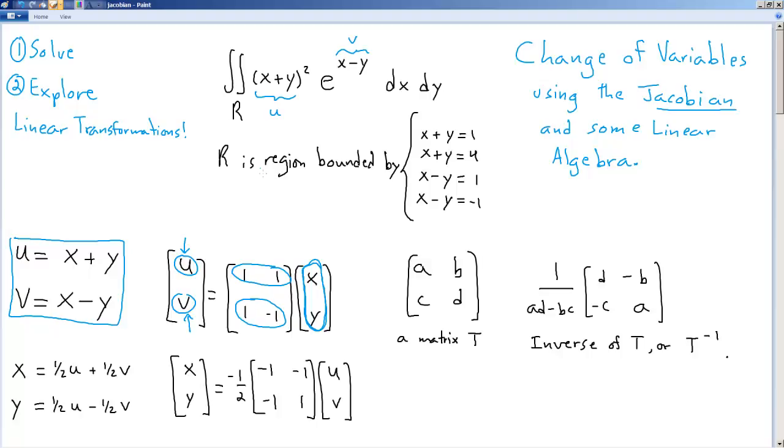Now, what we want to do in these change of variable problems, whether or not we're doing it linearly or not, is we want to express x and y in terms of u and v. So if this wasn't linear, we'd probably have to do some algebra tricks to solve them, but fortunately it is linear. And because we have this matrix, we'll call it T for the matrix of a linear transformation.